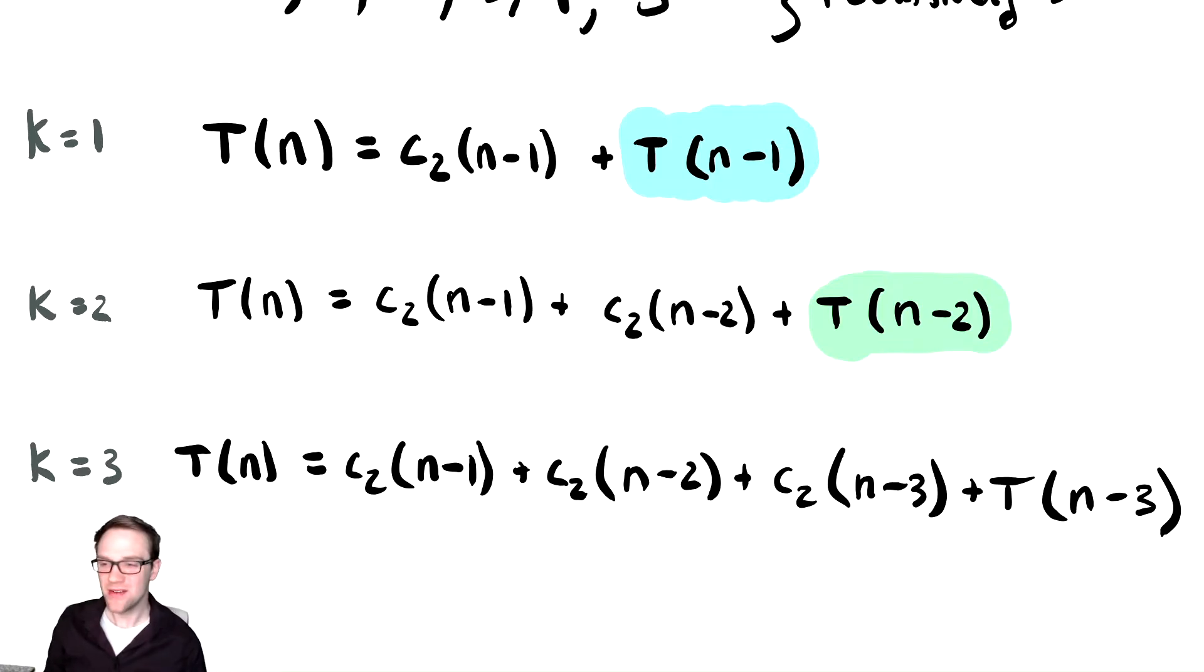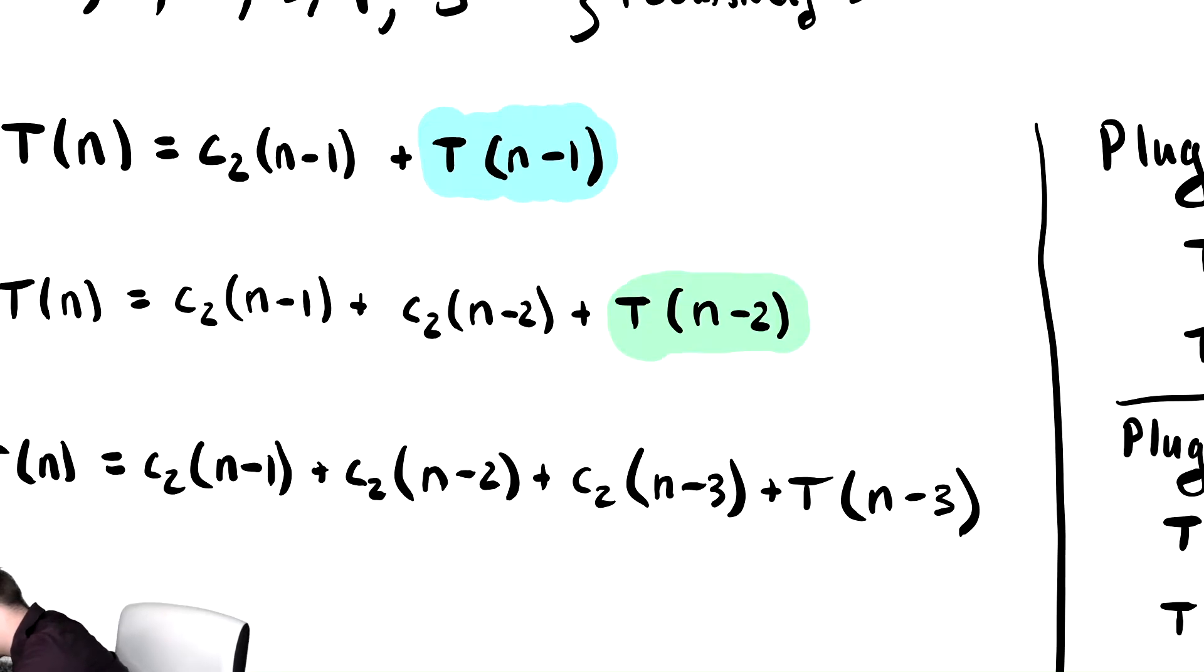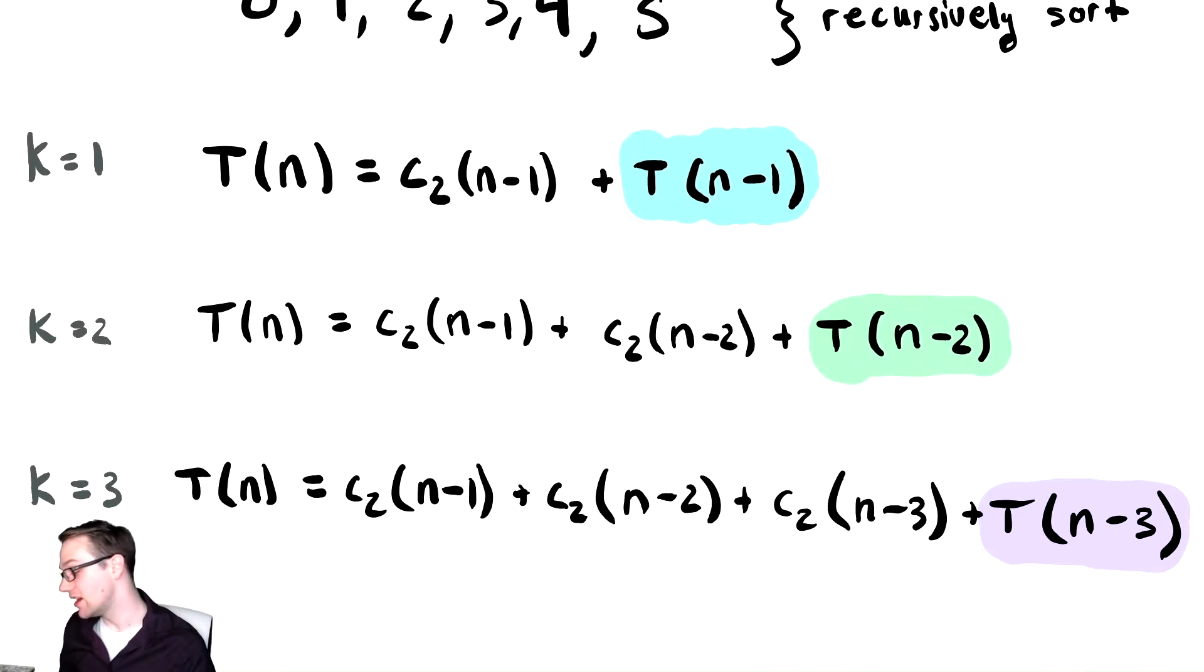This pattern is so not obvious that I'm going to start to try to point some things out. One thing I think is nice is the thing at the end, the T of, which I can highlight in a third color. All of the Ts appear to be T of n minus k. Because k is 1, 2, and 3, and it's T of n minus 1, n minus 2, and n minus 3. That looks not so bad.